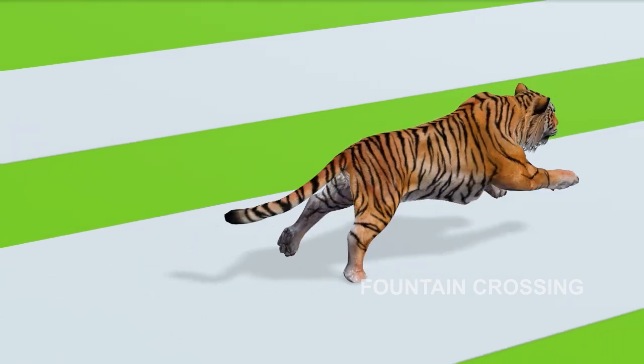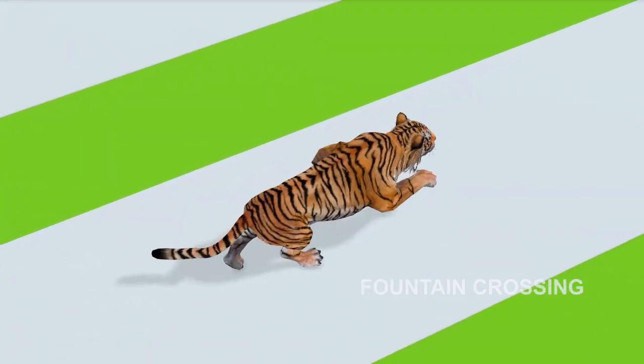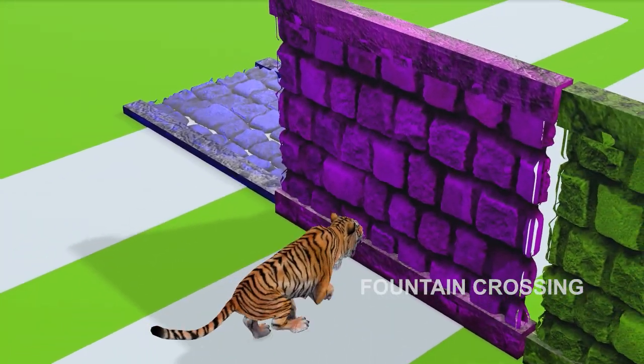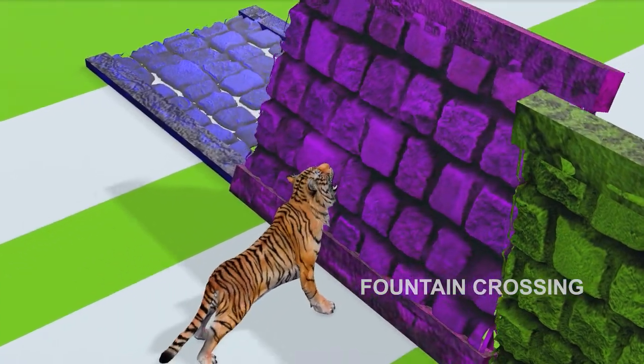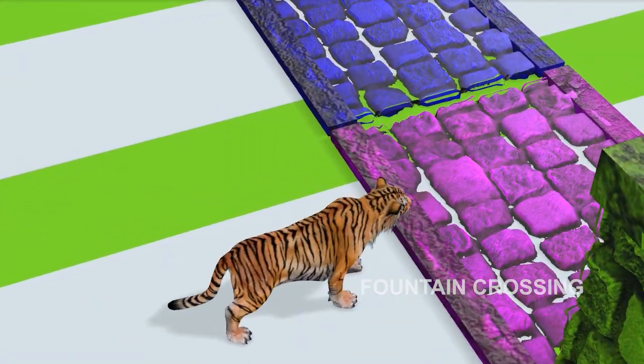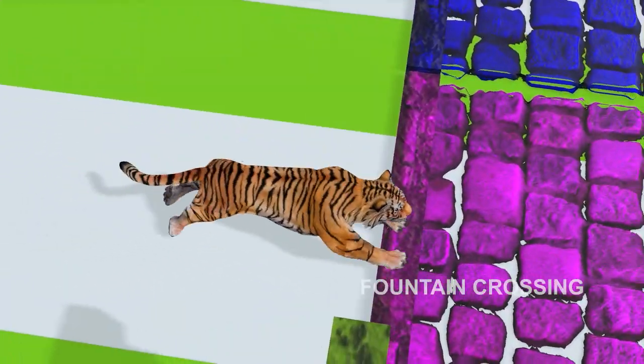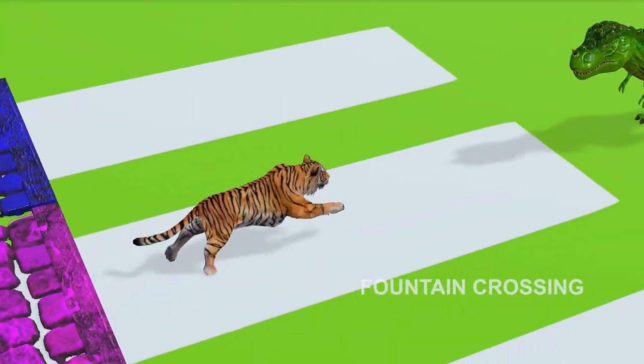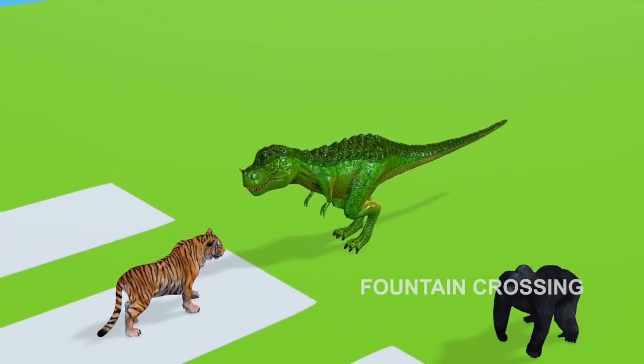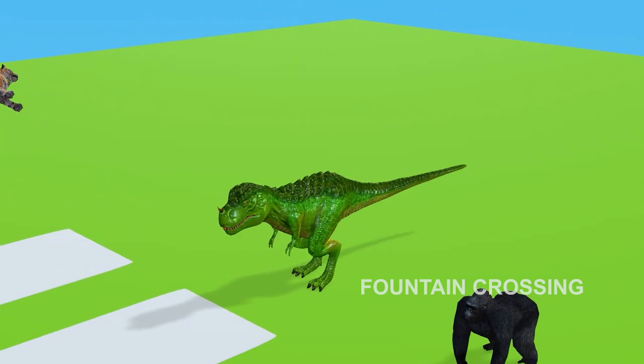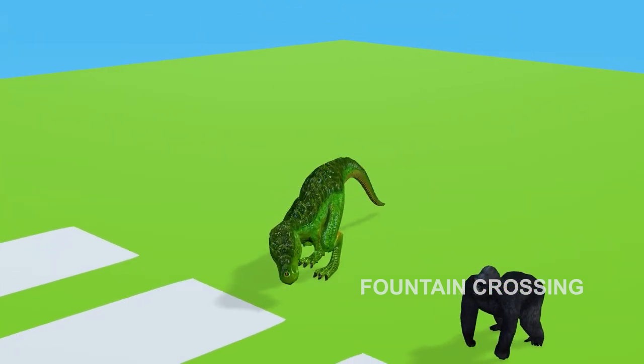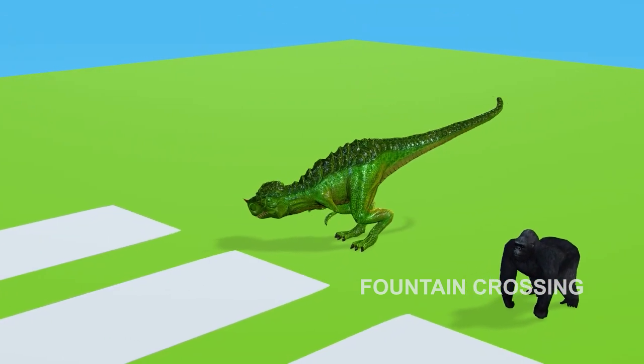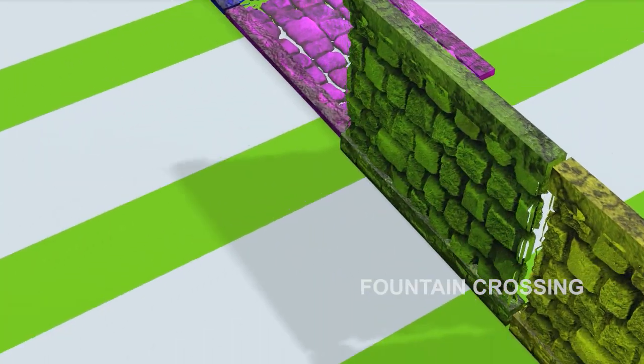Next turn. The tiger is very excited. It quickly crosses the purple wall. Oh no, it looks like crossing the wrong wall. What a poor tiger. Next turn.